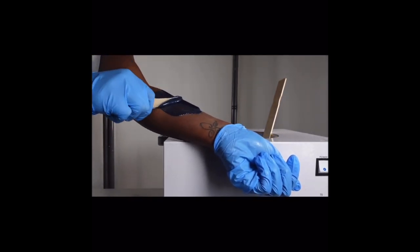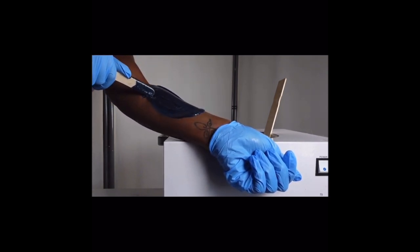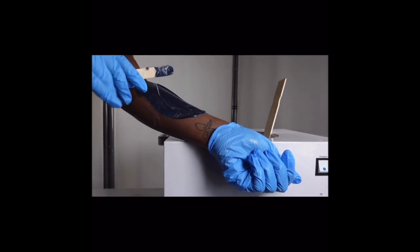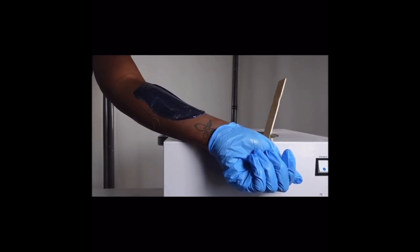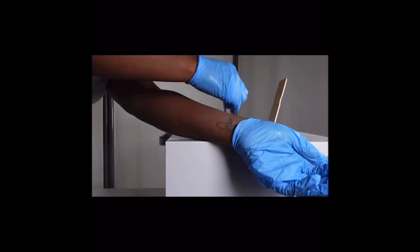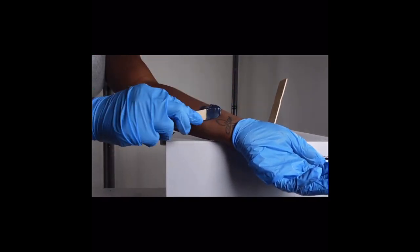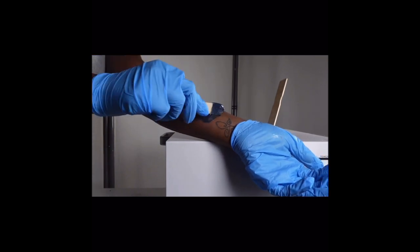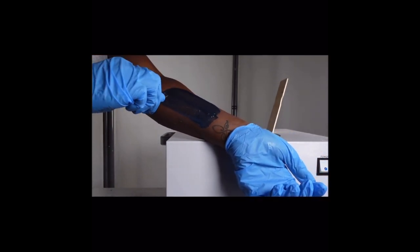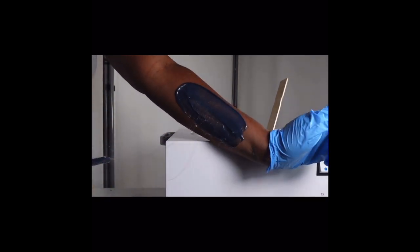This will be your typical underarm strip or stomach strip or even a Brazilian strip. These are the type of strips that you want for smaller areas. And this strip right here is going to be a cleanup strip going in the opposite direction upward, making sure that you can slightly see through the wax because you're not picking up a lot of hair and that's your cleanup.